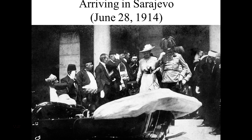Ferdinand decides to get back in the car and go back the way he came. He has a driver and a map expert with him. The driver and map guy are fighting over how to get out of the city and get to the hospital. They pull over in front of a delicatessen called Schiller's Market. All the assassins had left, except for one — assassin number five, Gavrilo Princip. He had actually gone into Schiller's Market to wait for the heat to go off, ordering a sandwich and sitting in the back.